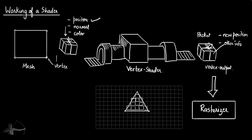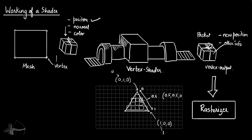Another task of the Rasterizer is to interpolate the data given by the vertex shader to pass it to the pixel shader. For example, if we have provided the vertex normal and the vertex normal of one vertex is (0, 1, 0) and the vertex normal of another vertex is (1, 0, 0), then the first component interpolates from 0 to 1 and the second component interpolates from 1 to 0. So the interpolated value at the midpoint would be (0.5, 0.5, 0). That is how the Rasterizer interpolates values for all the pixels covered by this geometric region.